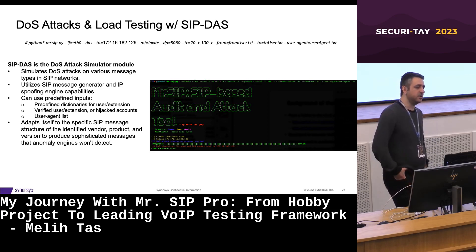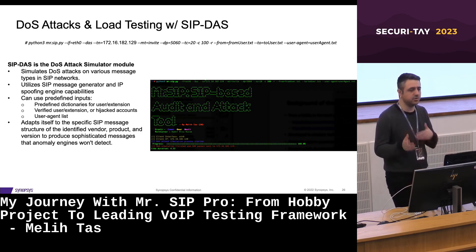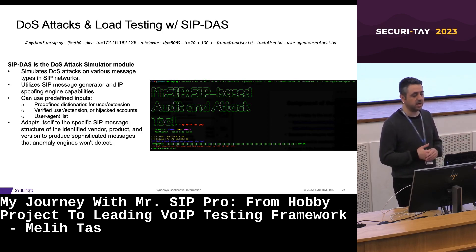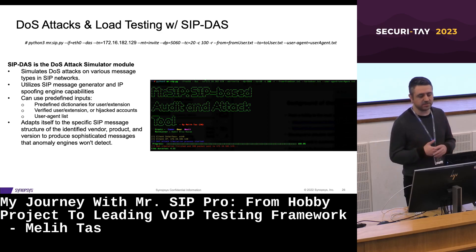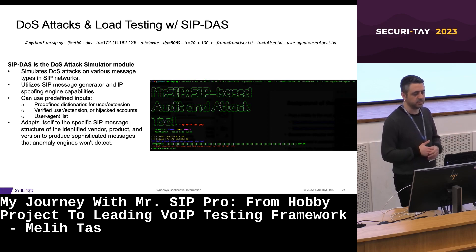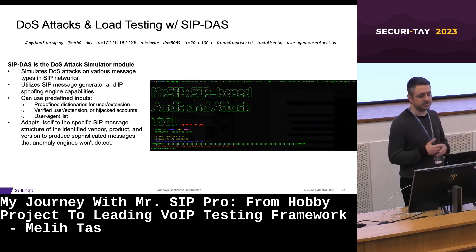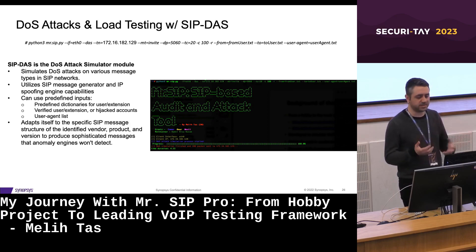The first offensive module is SIP DOS, the denial-of-service attack simulator, used to perform DoS attacks on various message types utilizing the SIP message generator and IP spoofing engine capabilities. It can perform more effective DoS attacks using predefined dictionaries for user extension, user agent, verified user extension, or hijacked accounts when operated in automatic scanning and behavioral modeling mode. For instance, it adapts itself in accordance with the specific SIP message structure particular to the identified vendor, product, or version — producing sophisticated messages that anomaly detection engines won't detect.